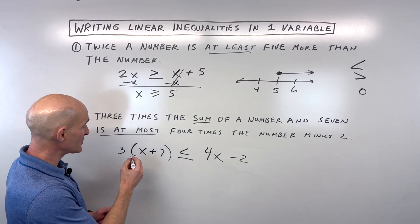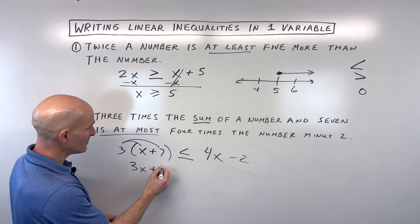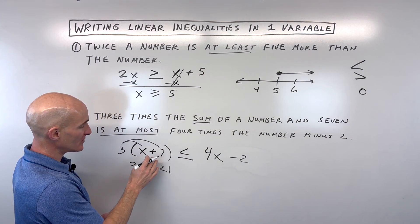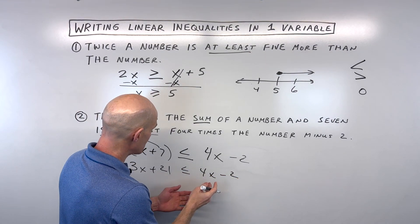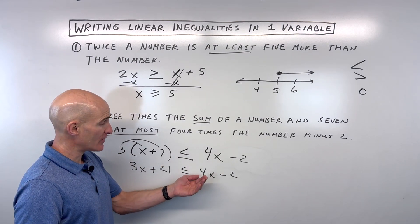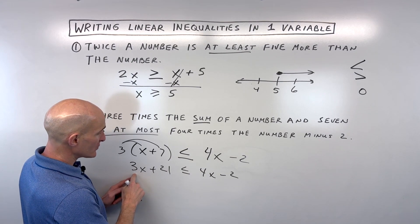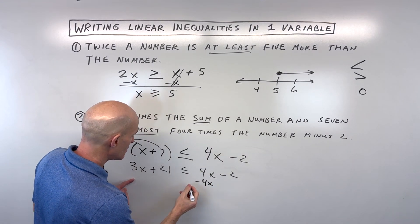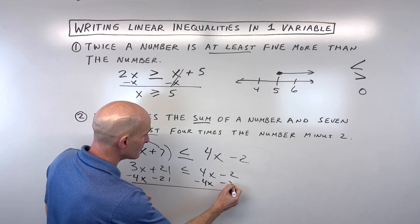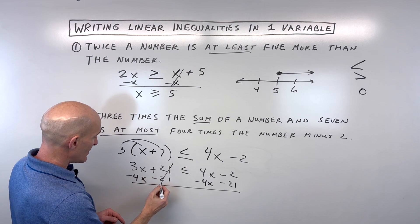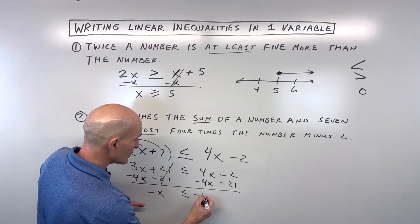Now let's solve it. First, simplify both sides — distribute the three: 3x + 21. Then get variables on one side and numbers on the other. Subtract 4x from both sides, then subtract 21 from both sides. That comes out to −1x ≤ −23.